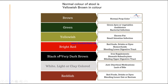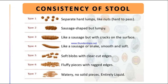Black or very dark brown stool means the patient has taken iron supplements or bismuth subsalicylate, or there is bleeding in the upper digestive tract. White, light, or clay-colored stool indicates diarrhea with anti-diarrheal medication use or lack of bile content. Reddish stool differs from bright red and indicates red foods, drinks, dyes, or bleeding in the lower gut.